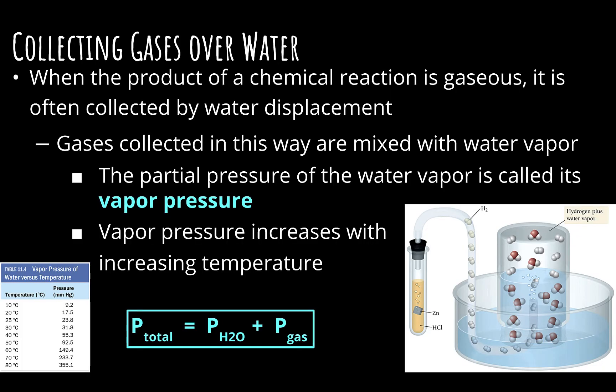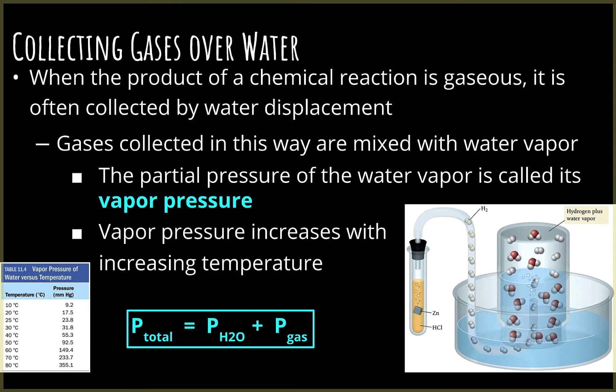The other thing that can happen and end up with a mixture of gases is collecting gas over water. When you are running a chemical reaction that produces a gas, it's often collected by water displacement. If you look down at this picture in the corner, you can see there's a reaction happening inside the test tube. This is similar to a reaction that you did when we did the chemical reaction lab. When HCl and zinc react, you get hydrogen gas and zinc chloride. This is not balanced, but just so you can see where this came from. This is the gas that's being produced.